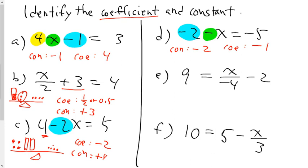That's right. It's not 1. If you ask yourself the question, how much of x do you have, you don't have 1x. You have negative 1x. So therefore, your coefficient would be negative 1.